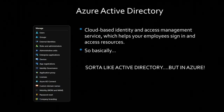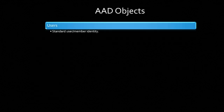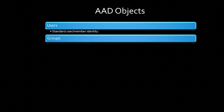Azure Active Directory is basically Active Directory, but it's in Azure. There are a bunch of AAD objects. There are users, which are the standard user and member identity — you log in as a user. You have groups, which is a logical collection of objects — users, groups, service principals, etc. You have applications, which are used as a template to create one or more service principal objects.